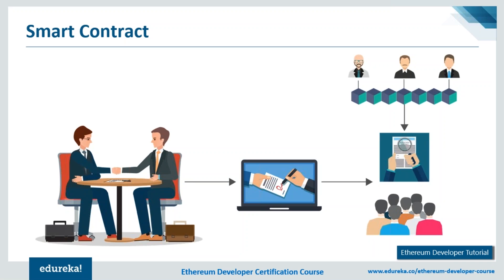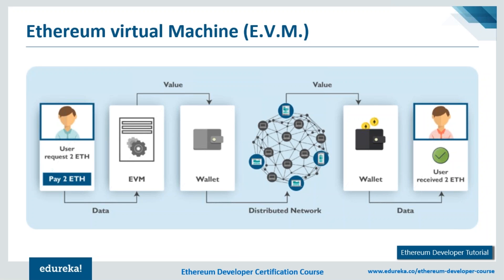Where is the smart contract code executed? That is the Ethereum Virtual Machine. The EVM is the engine in which transaction code gets executed, enabling development of potentially thousands of different applications all on one platform. Contracts written in a smart contract-specific programming language are compiled into bytecode which an EVM can read and execute.